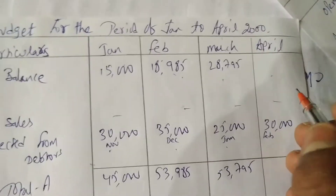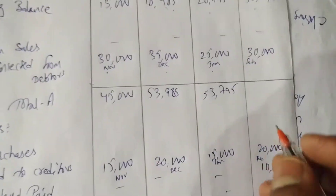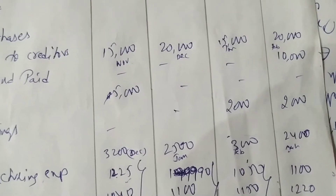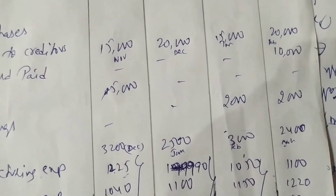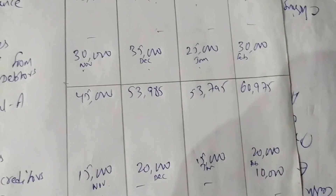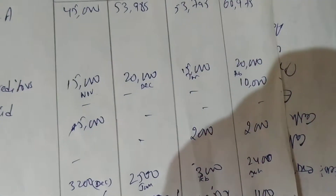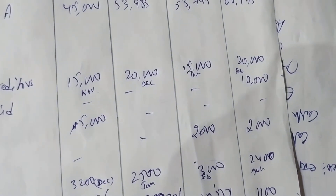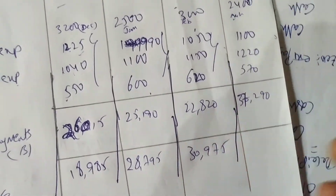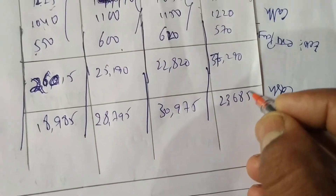April: opening balance 30,975 plus receipts 30,000 gives 60,975. Payments: creditors 20,000; dividend 10,000; building installment 2,000; wages 2,400; manufacturing 1,100; administration 1,220; selling 570 — total 37,290. Closing balance: 60,975 minus 37,290 equals 23,685.